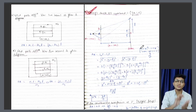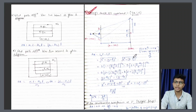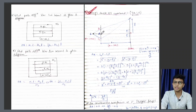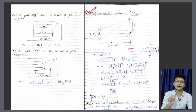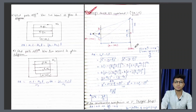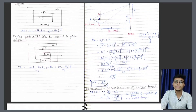Ab YDSE ka setup dekhein: dono slits ke beech ka distance small d, aur screen kitna door rakha gaya — capital D. Yeh small d dono slit ke beech ka difference hai, aur capital D screen aur source ka difference hai. Aur yeh jo Y hoga — yani ki jo interference pattern banega — jo constructive bright ya dark line banega — wo Y distance hai, jo center se Y distance pe banega. Ab jo path difference ke calculation se nikal ke aata hai: path difference = Y small d by capital D.